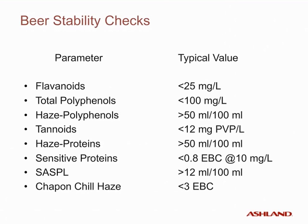Typical checks for beer stability and their typical values in stable beer are listed here. Flavonoids can be expected to be present at less than 25 milligrams per liter. Total polyphenols should be less than 100 milligrams per liter. Haze polyphenols will have values greater than 50 milliliters of reagent per 100 milliliters. Tanoids should be less than 12 milligrams of PVPP per liter or below detectable limits, because tanoids are the most troublesome haze precursor. On the protein side, haze protein should have values greater than 50 milliliters of reagent per 100 milliliters of beer.